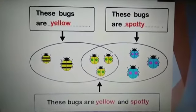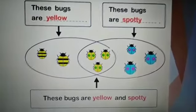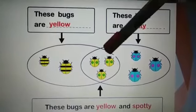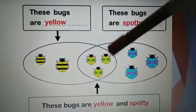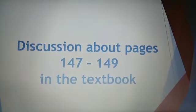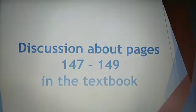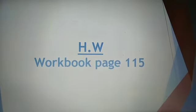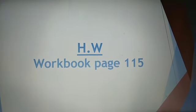That's the way we sort bugs according to their properties: bugs that are only yellow, bugs that are yellow and spotty, and bugs that are only spotty. In the next period we will have a discussion about pages 147 to 149 in the textbook. For now, this is the end of our math period for today. Your homework will be page 115 in the workbook. I hope that you enjoyed watching this video. See you next time and goodbye.